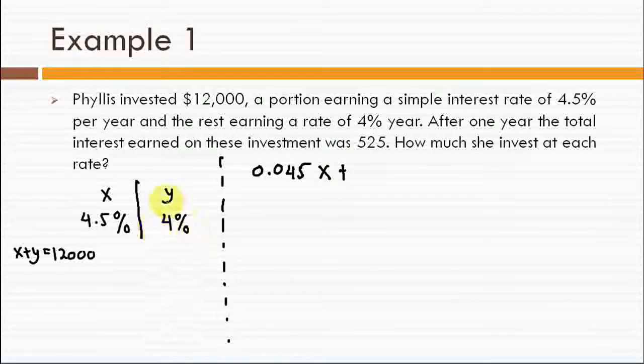And the interest earned from the money that she invested at the rate of 4% is 4% from y, which is 0.04y. And the total of the interest earned was $525.